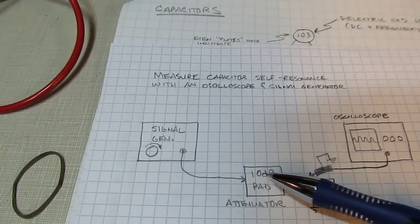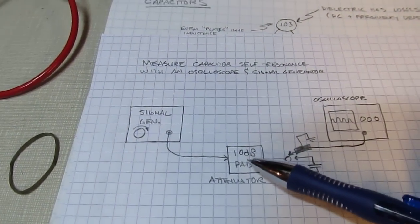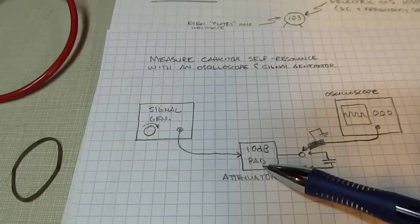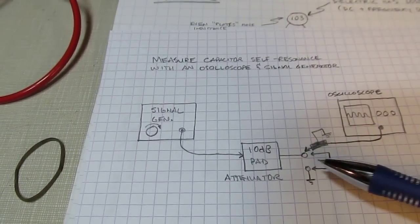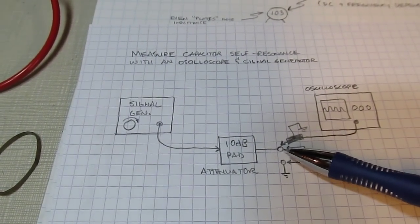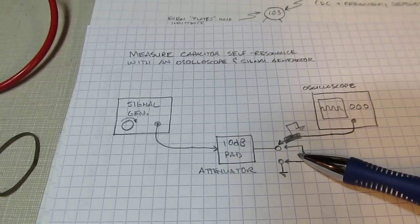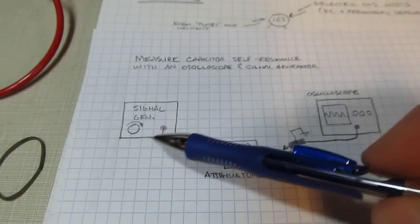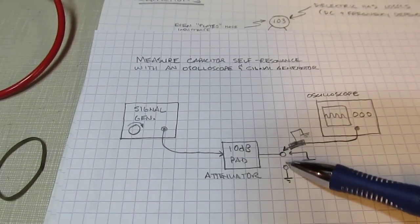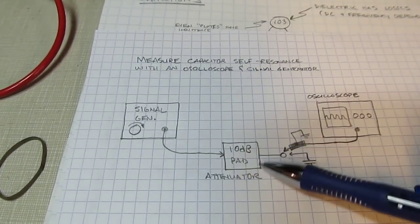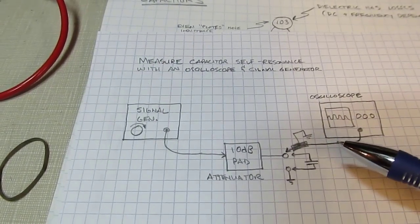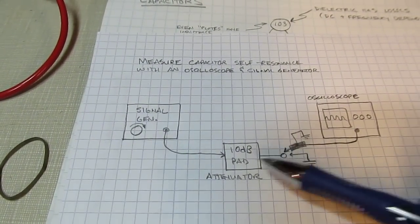We can measure that by adjusting the frequency of a signal going through the capacitor. The setup is simple: take a signal generator output, run it through a 10 dB or 20 dB pad attenuator — that way the signal generator doesn't see a huge change in impedance from the capacitor. In reality you can connect the signal generator directly to the capacitor if you don't have a pad, putting the capacitor from the signal generator output to ground and probing the voltage across it.